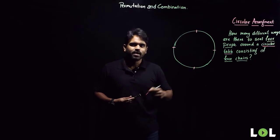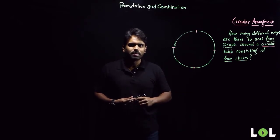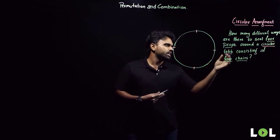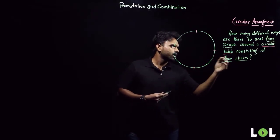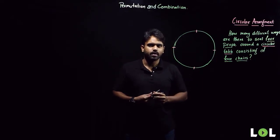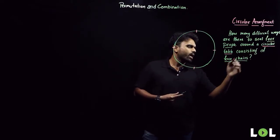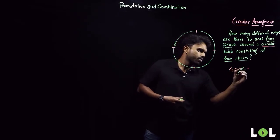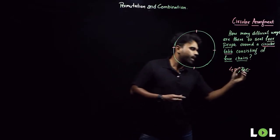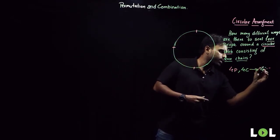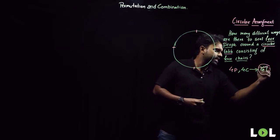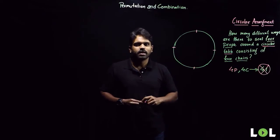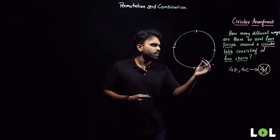Let's look at questions in circular arrangement. The first question says: how many different ways are there to seat four people around a circular table consisting of four chairs? You might apply the learning and directly say it is four factorial — which I would say is exactly wrong. Why is it wrong? Let's start thinking.